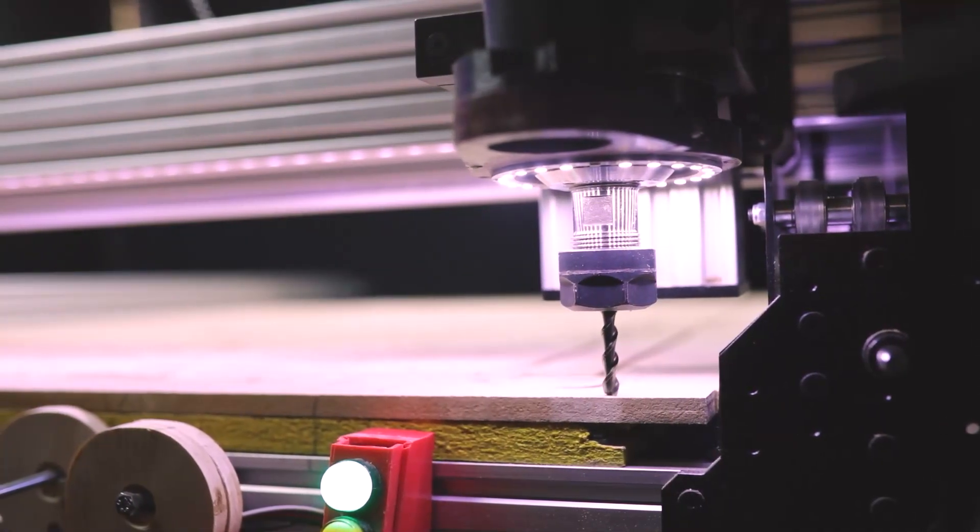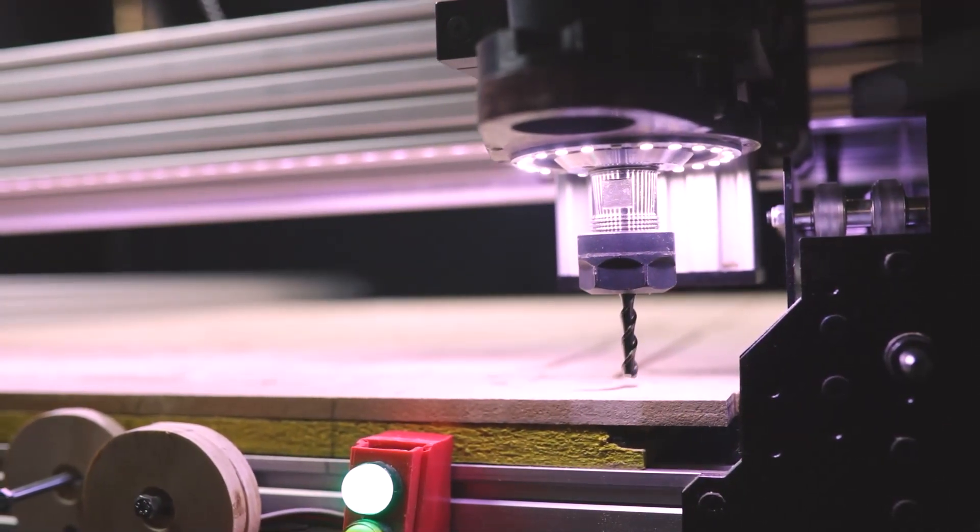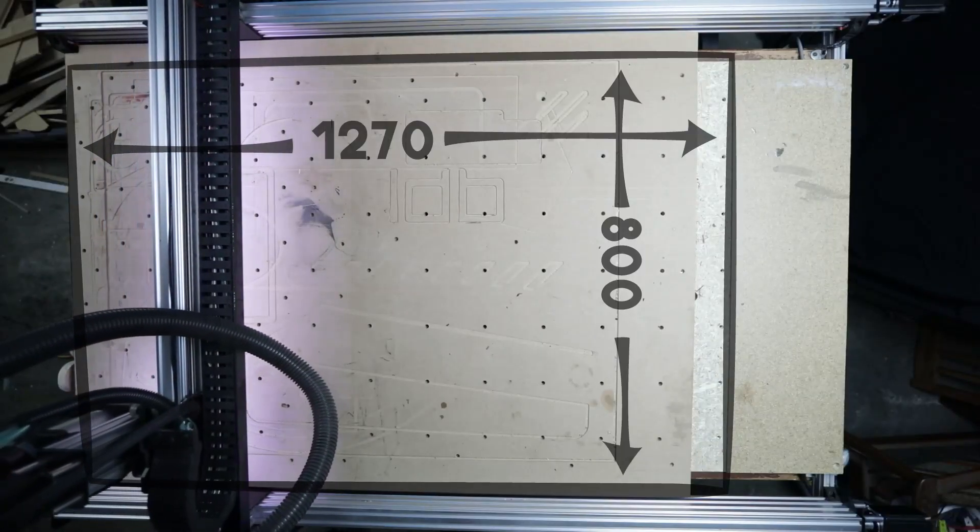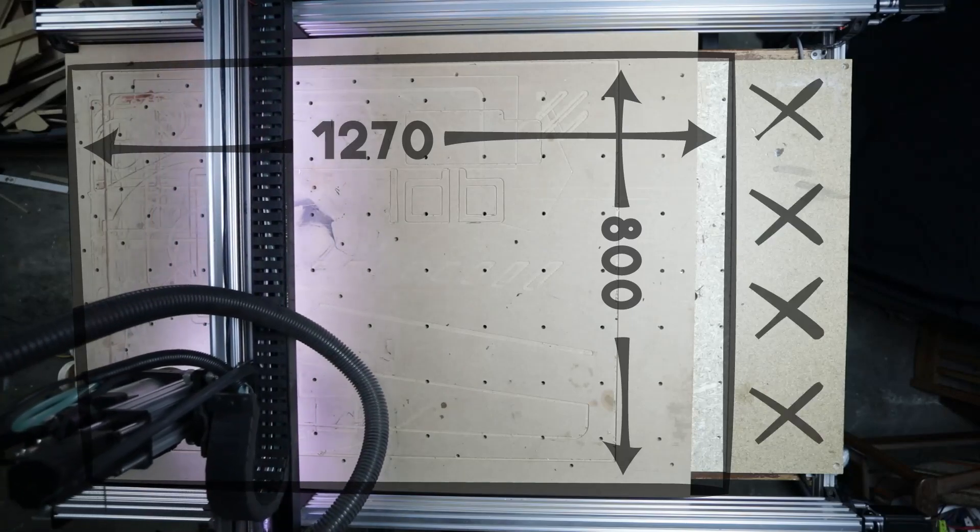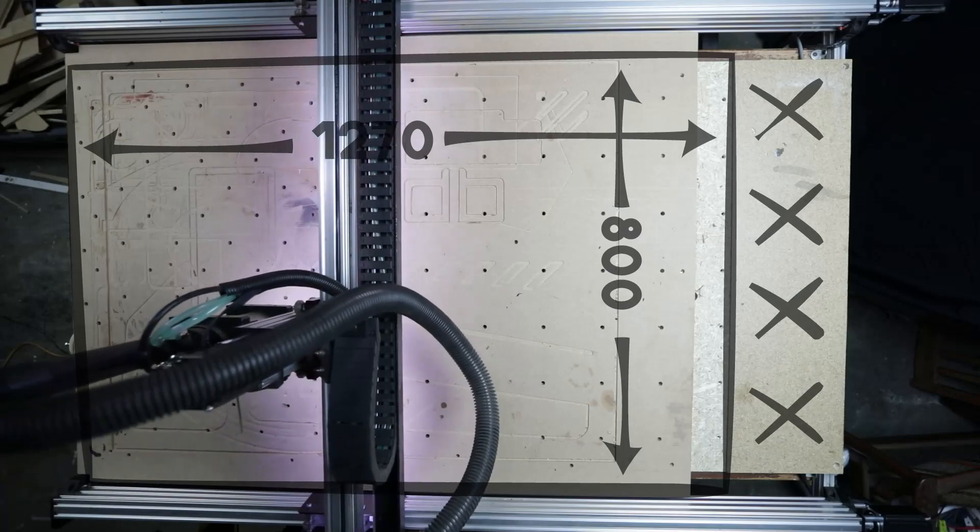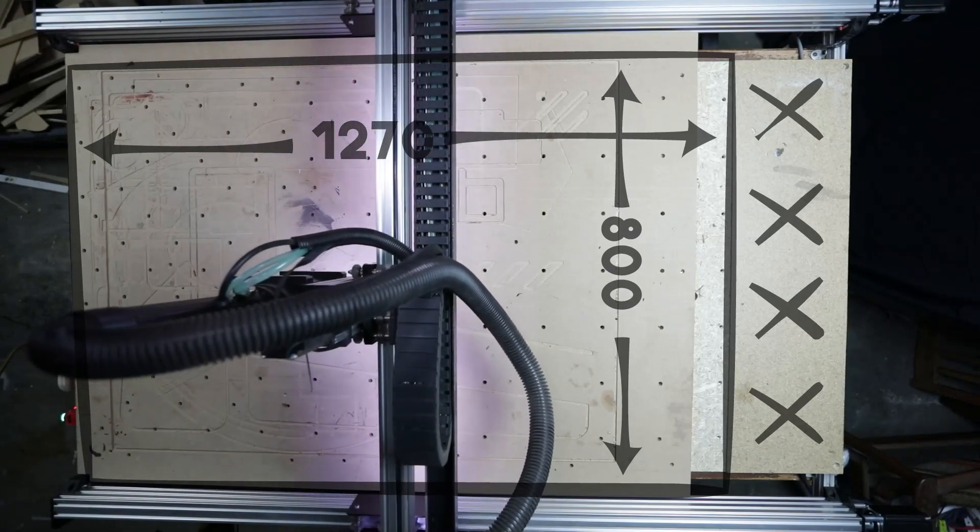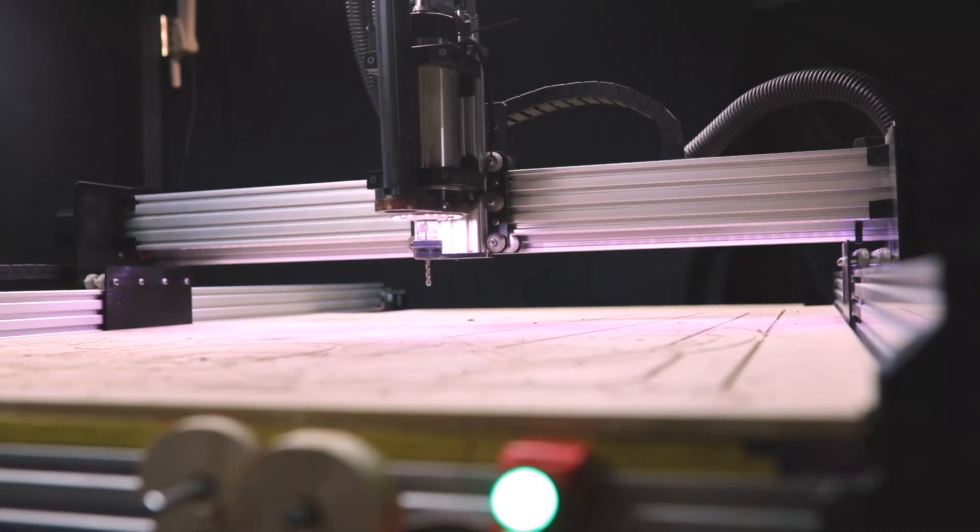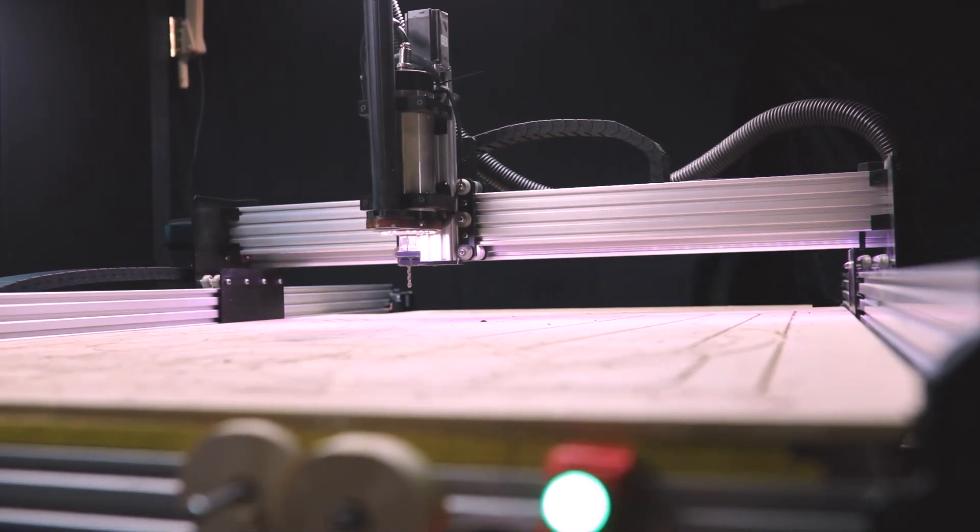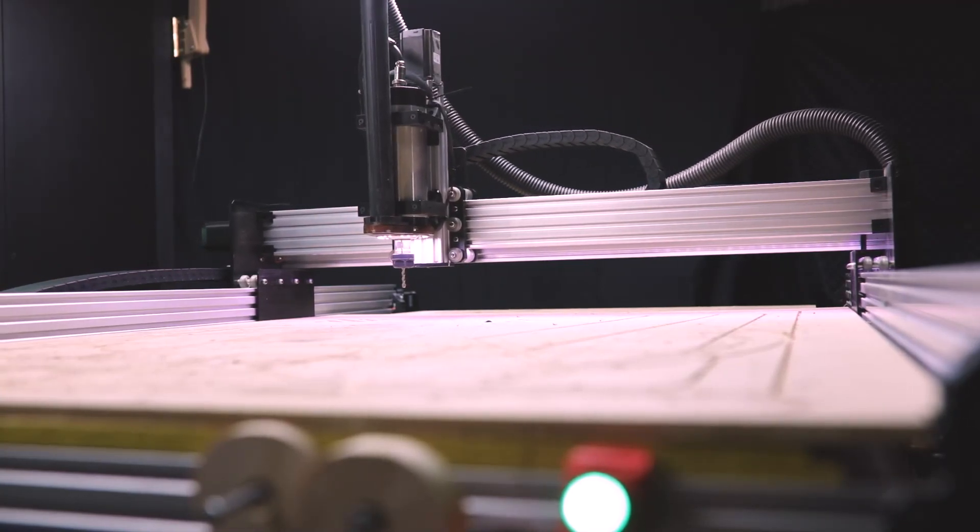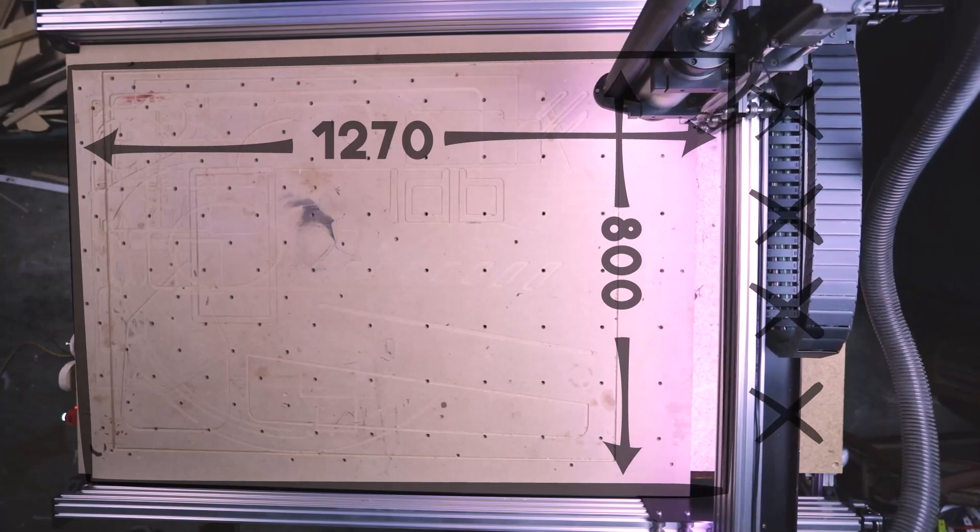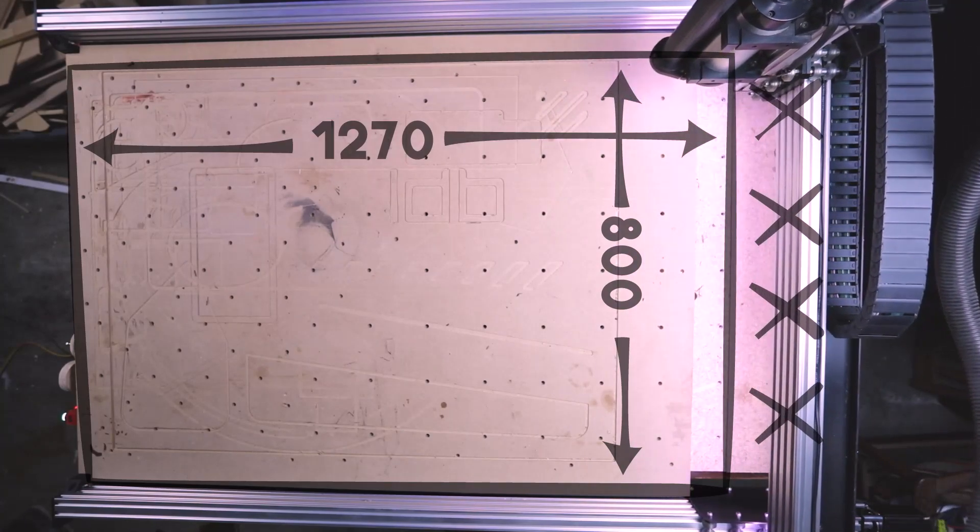So I ended up purchasing the 1000 by 1500 version of the Workbee. You can see there that the cutting area is actually a little bit smaller, so that's 1270 by 800 millimeters. On the right hand side, you can see that there's a voided area, a place where the spindle can't reach because it's mounted on the front of the X-beam there. I'm running about 120 to 150 millimeters on the Z-axis. However, that can be changed depending on how you mounted your spoil board.